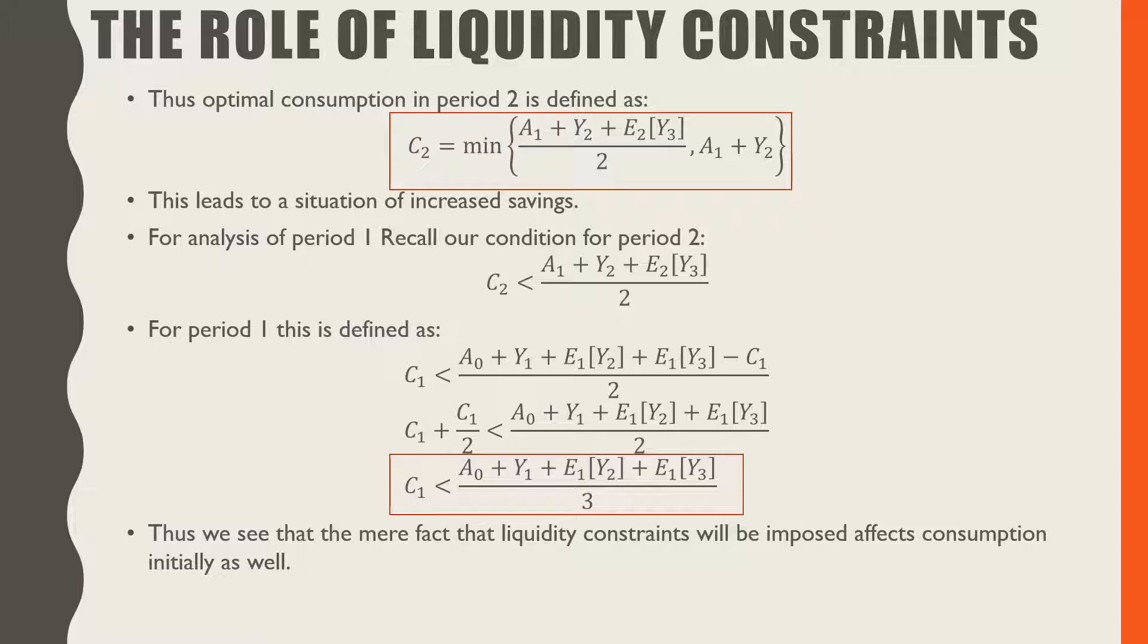For period one, based on some algebraic identities and the law of iterative expectations, we have that our consumption in period one must be less than our endowment initially plus labor income in period one.